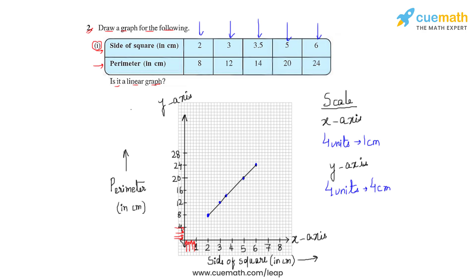If we observe the values from the table and also the graph, we see that with the increase in the side of the square, the perimeter is also increasing. Hence we can say that yes, it is a linear graph. This is how we answer the first part of question number two.